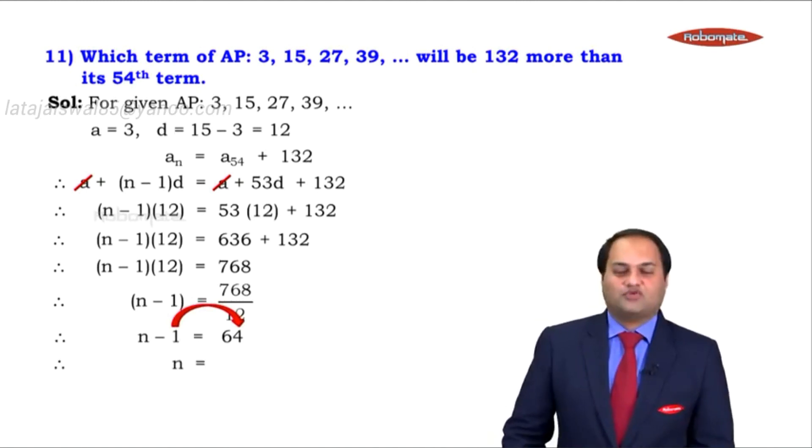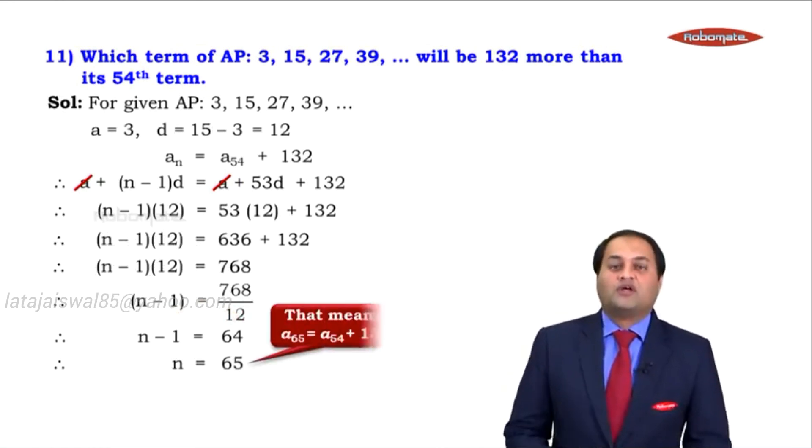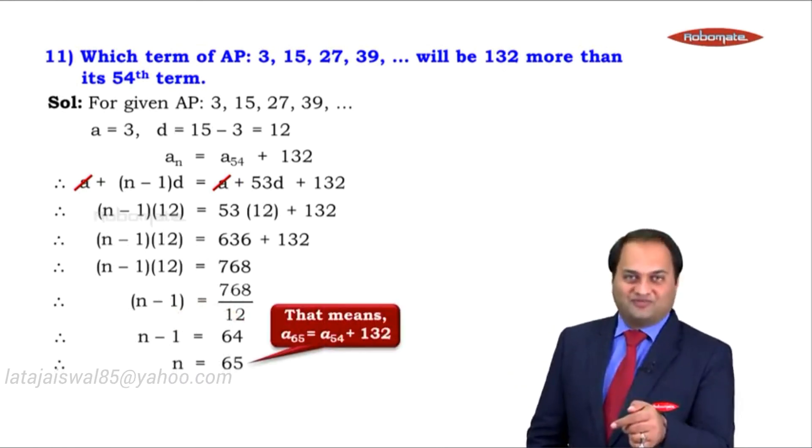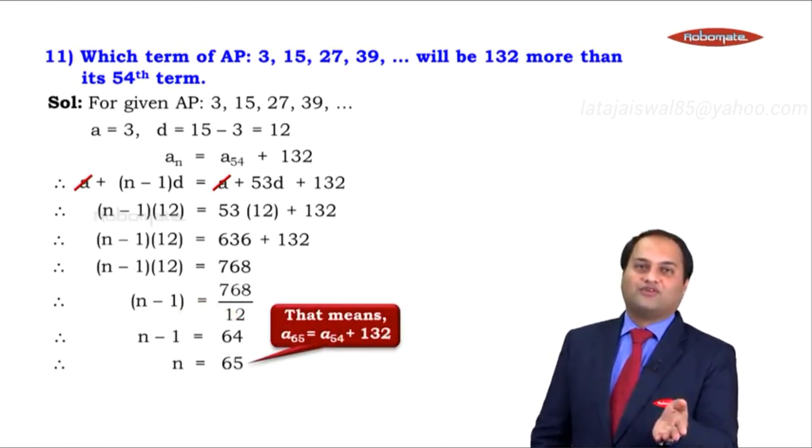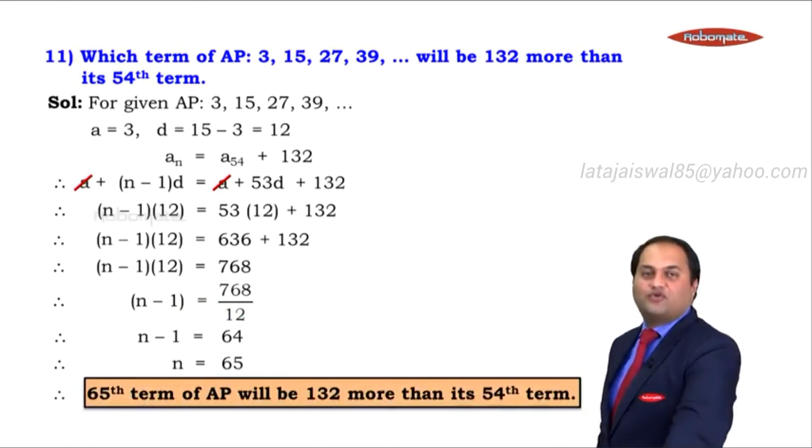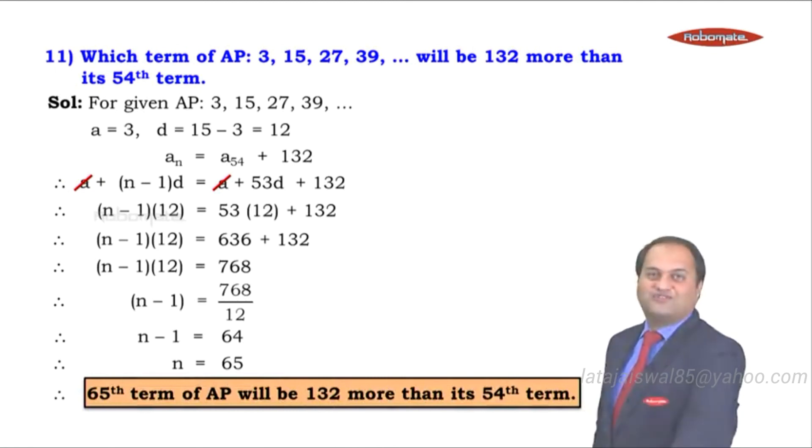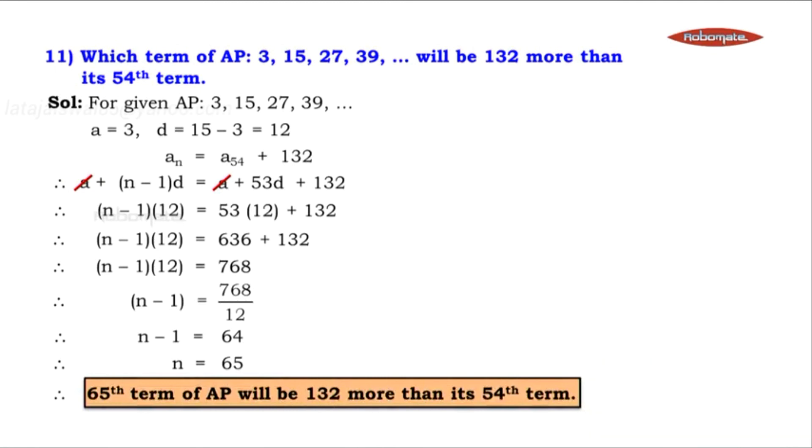Take one to the other side, you get 64 plus 1. Therefore n is equal to 65. This shows that the 65th term is 132 more than the 54th term. So the final answer will be, therefore, the 65th term of the AP will be 132 more than its 54th term. As simple as that. Thank you.